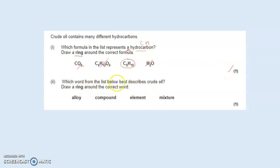The next one is which word from the list below best describes crude oil? Alloy is made up from metals, so it's not a hydrocarbon compound. Yes, it could be a compound, but crude oil has got many different hydrocarbons, so it can't be just a compound. Is it an element? Element is what you get in the periodic table, so it's not. It's a mixture of hydrocarbons. Therefore the correct answer is mixture and you have to draw a ring around it.